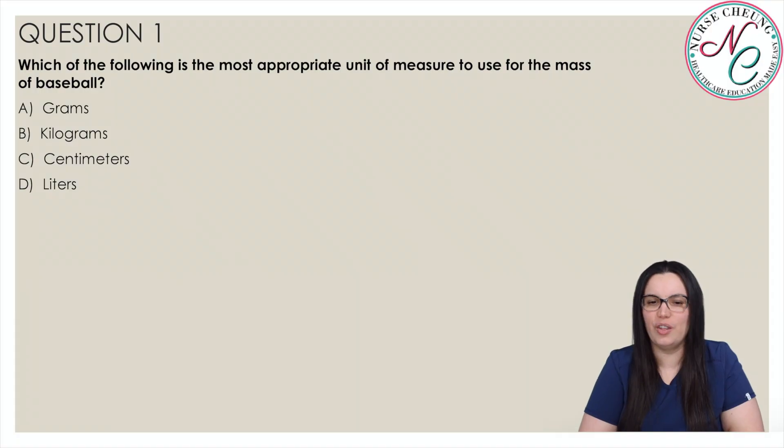Starting with question one. Which of the following is the most appropriate unit of measure to use for the mass of a baseball? Is it A, grams, B, kilograms, C, centimeters, or D, liters? And the correct answer is A, grams. The most appropriate unit of measure for a baseball would be in grams. Kilograms could be used, but since the baseball has a significantly lesser mass than one kilogram, using grams would be the better option.